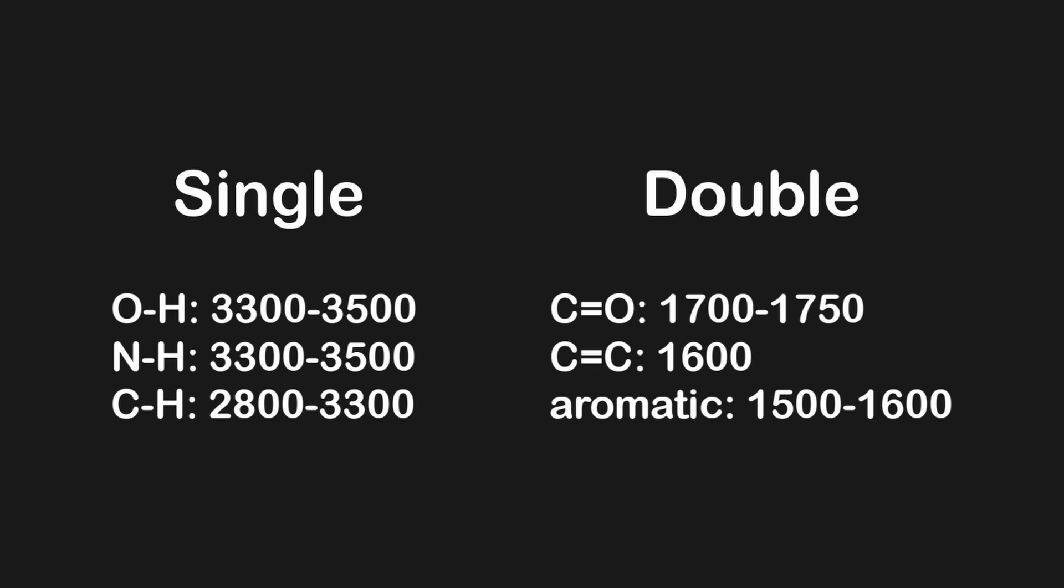Furthermore, the general appearance of different bonds in an IR spectrum also differs. For example, OH bonds tend to be very broad, while C double bonded to O are considered sharp. Overall, you shouldn't learn an exhaustive list of different peaks. Instead, focus on understanding the different bond regions and the most important stretches.